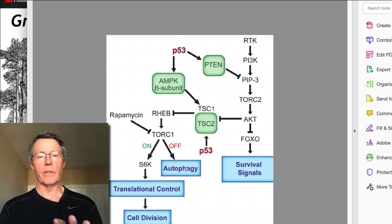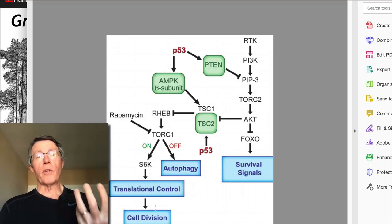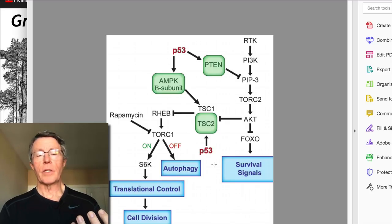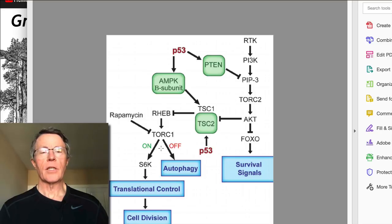You've got autophagy here, translational control and cell division here — in other words, cell growth, which is required before you get to cell division, is on the left side. Autophagy is here in the middle and survival signals are over on the right. Now at the decision point between autophagy and translational control and cell division, or with the growth pathway, is a thing called TORC1 — T-O-R-C-1.